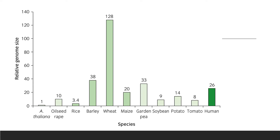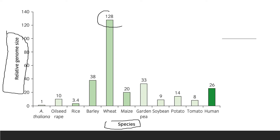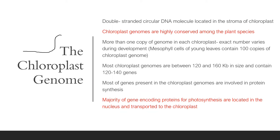Looking at a comparison of genome sizes across species — with relative genome size on the Y axis and species on the X axis — the biggest genomic size observed is wheat. Then we have barley, garden peas, humans, potatoes, tomatoes, and oil seeds, which have relatively smaller genomic sizes. Wheat has a huge genomic size, likely due to the presence of repetitive regions and complexity.